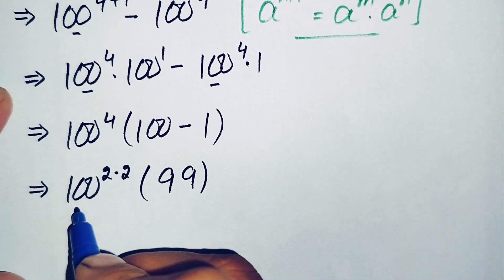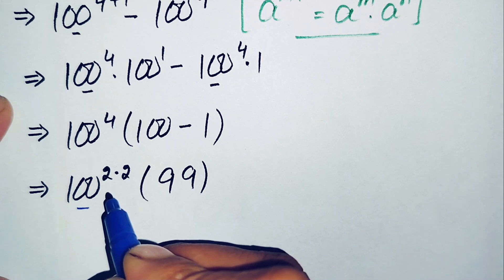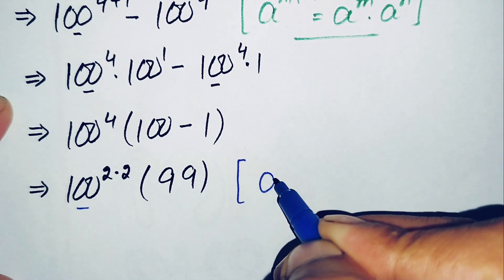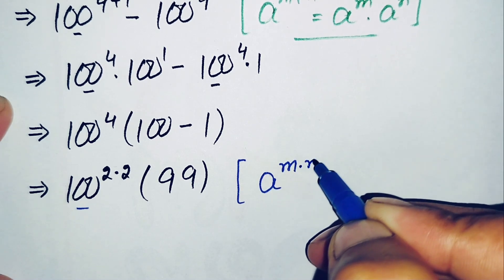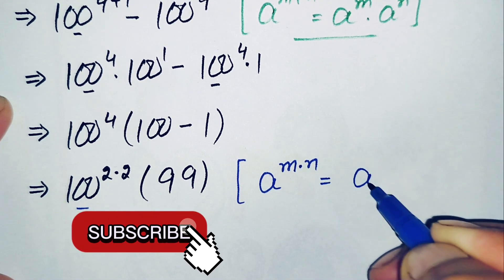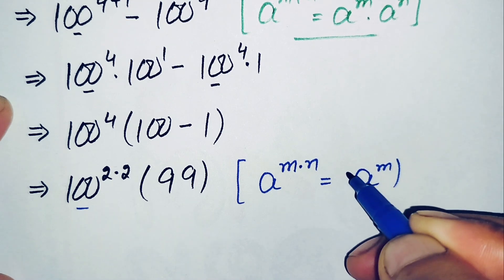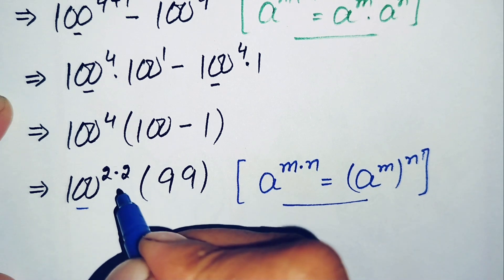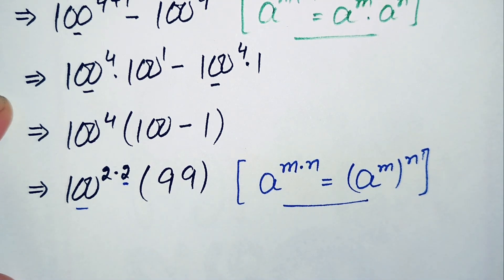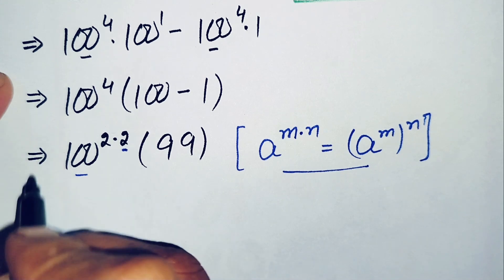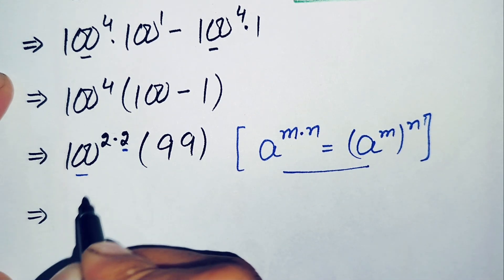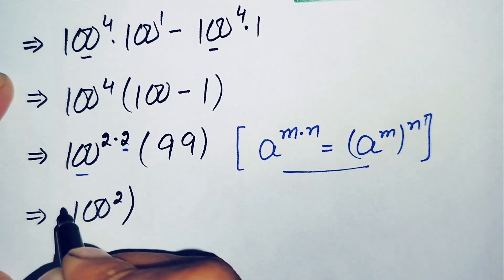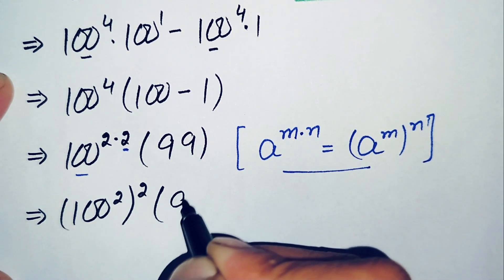Now in the term 100 raised to power 4, we will factorize the exponent 4 as 2 times 2, and apply the exponential property a raised to power m times n, which equals a raised to power m, whole raised to power n. Using this property, 100 raised to power 2 times 2 becomes 100 raised to power 2, whole squared, times 99.